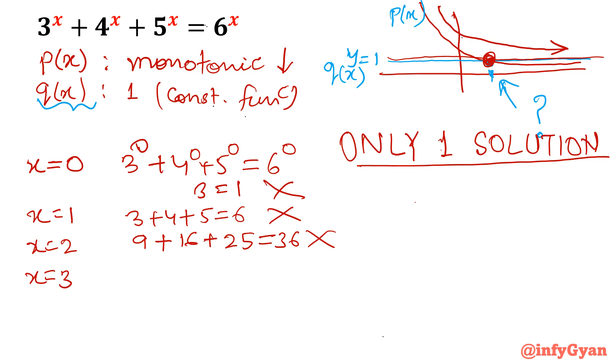x=3: 3^3 is 27, 4^3 is 64, 5^3 is 125, equals 6^3 is 216. Add all three numbers - it is 216. That means x=3 is the only solution.